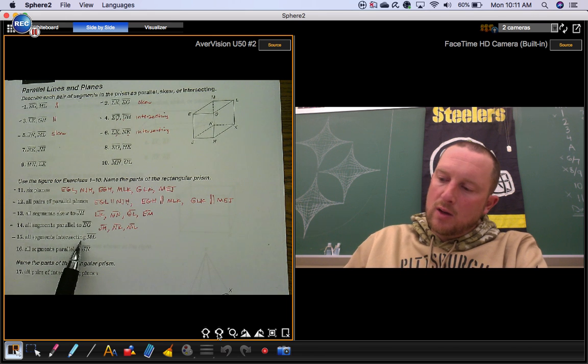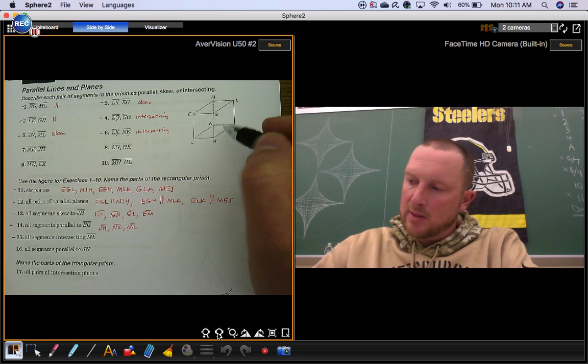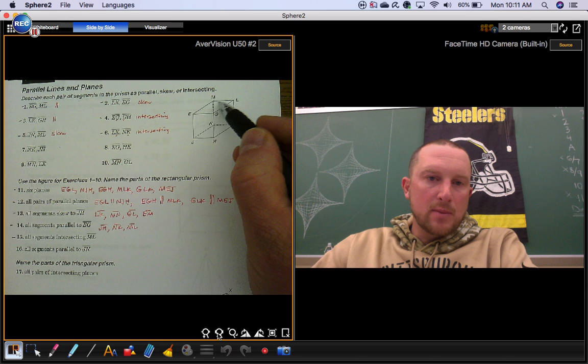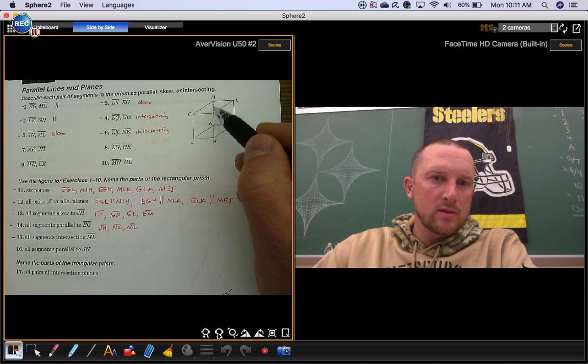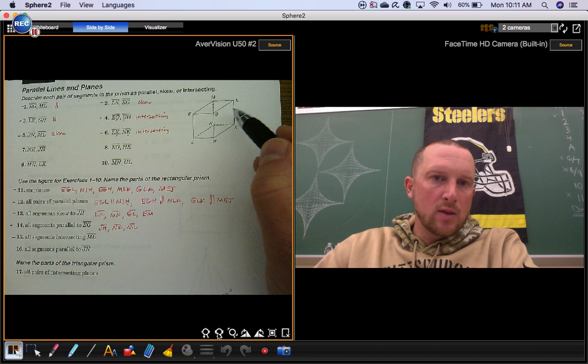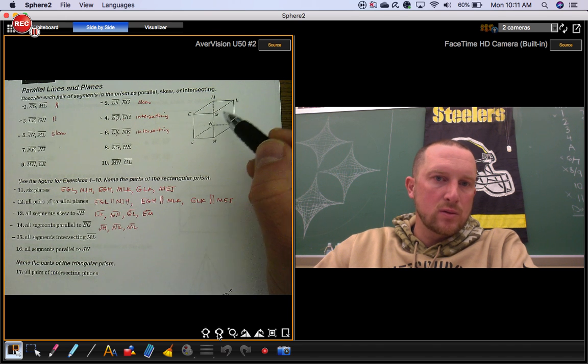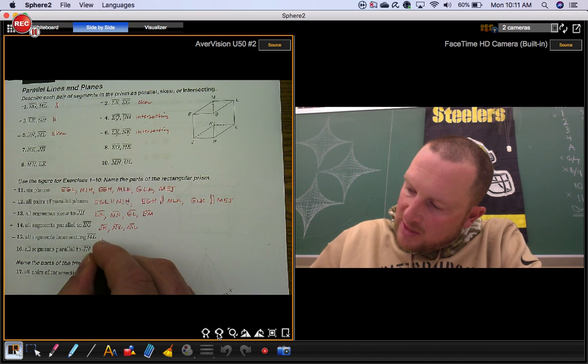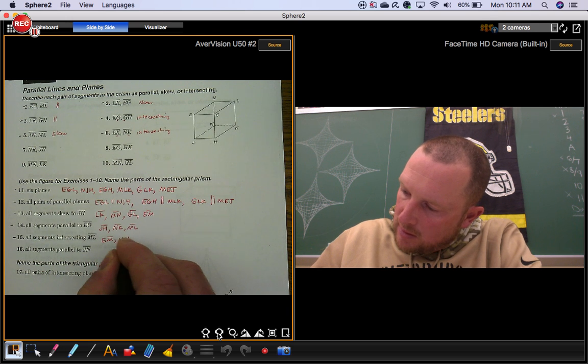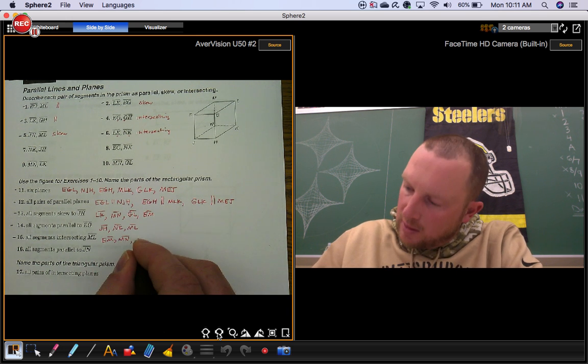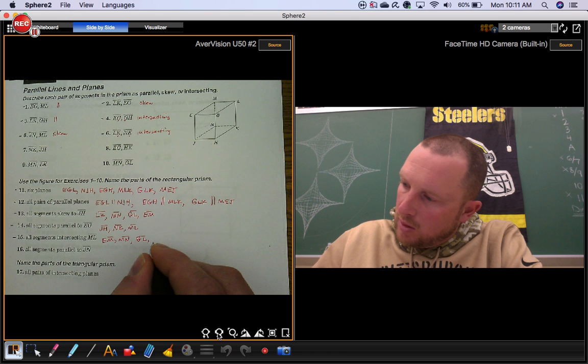Number 15, all segments intersecting segment ML. Find segment ML. The ones that intersect, it will be the ones that touch M, those two, and the ones that touch L, those two. So that would be segment EM and segment MN, also segment GL and segment LK.